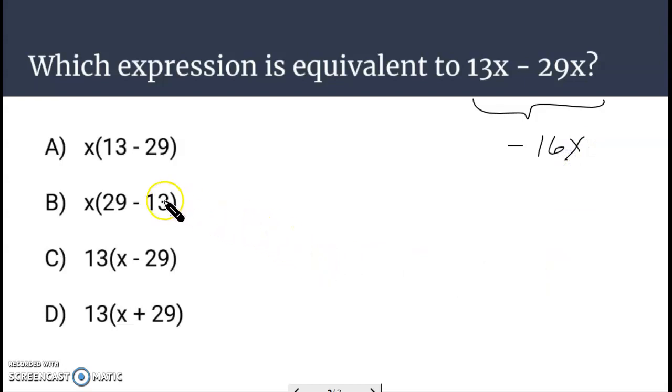So what we could do is simplify each of these choices and then go down until we see a match for negative 16x. But you might see it before then.